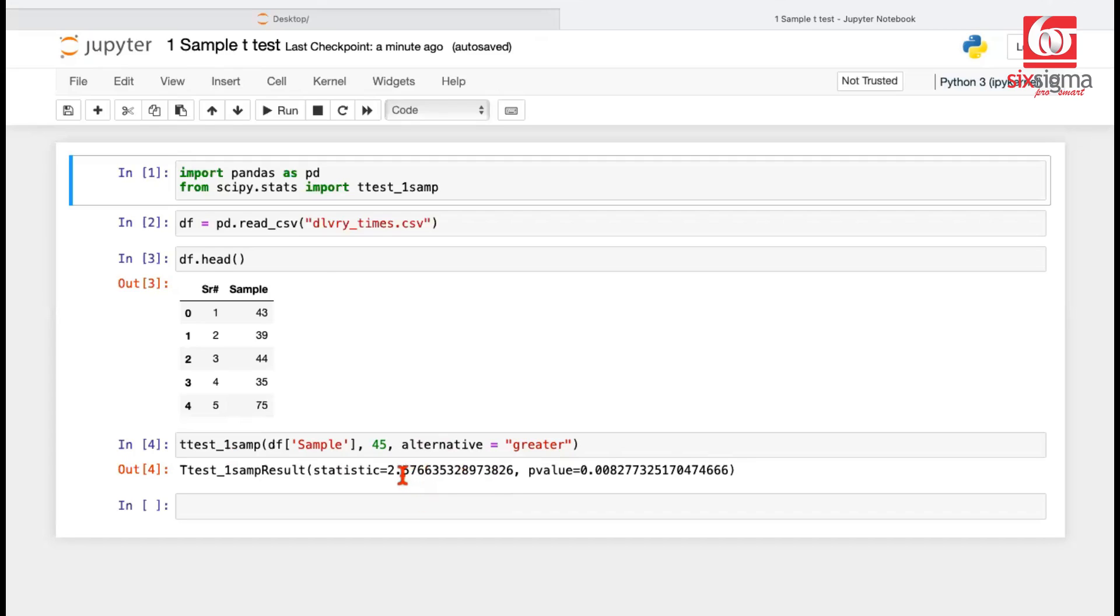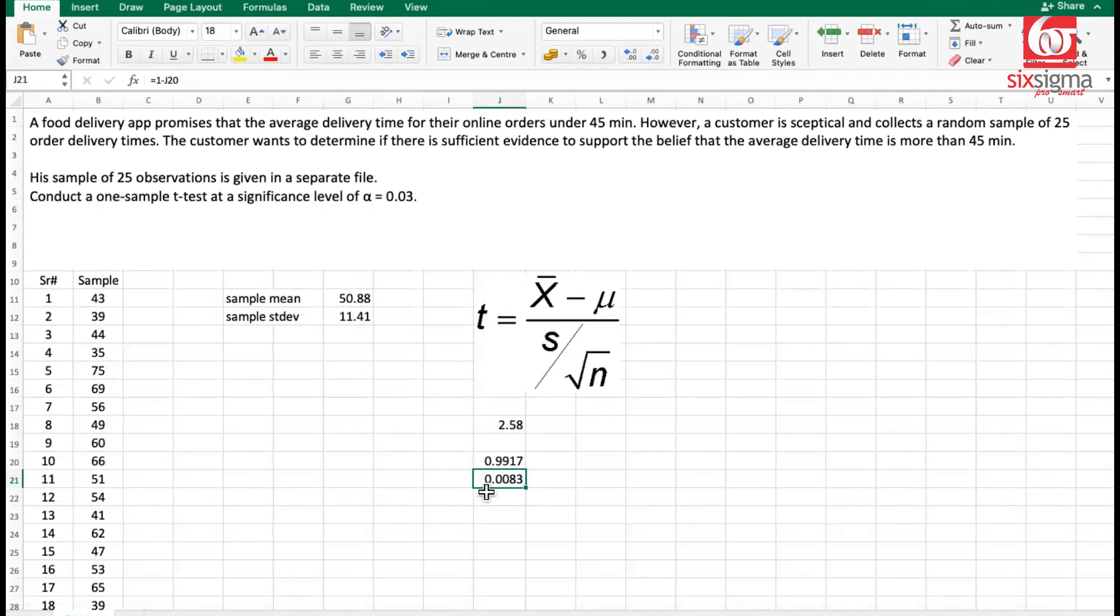The test statistic, as you can see, is approximately 2.58, which is what we had there, and the p-value is 0.0083. That's exactly what we computed in Excel, 0.0083. So the conclusion is going to be the same. The p-value is less than alpha, and the test statistic falls in the critical region. So we go ahead and reject the null hypothesis with 97% confidence.